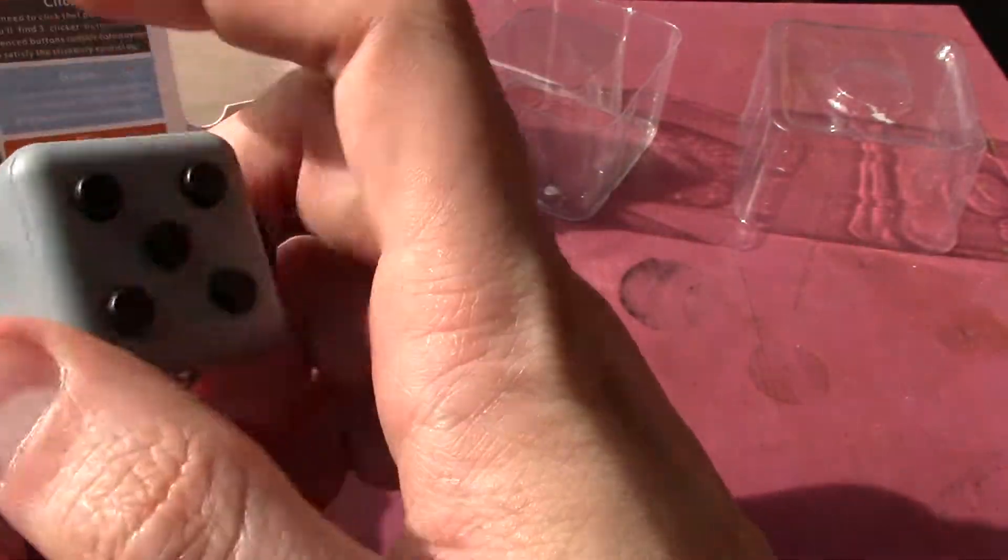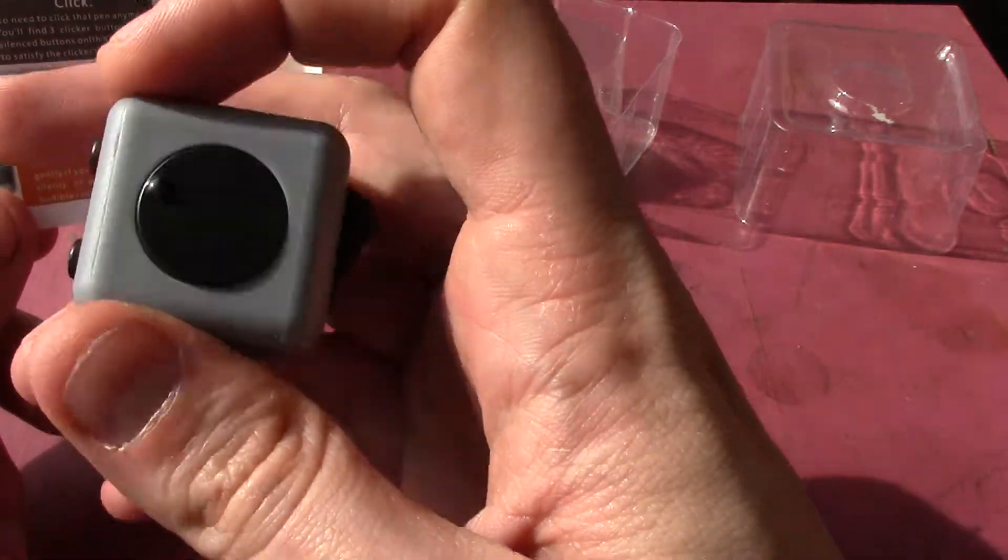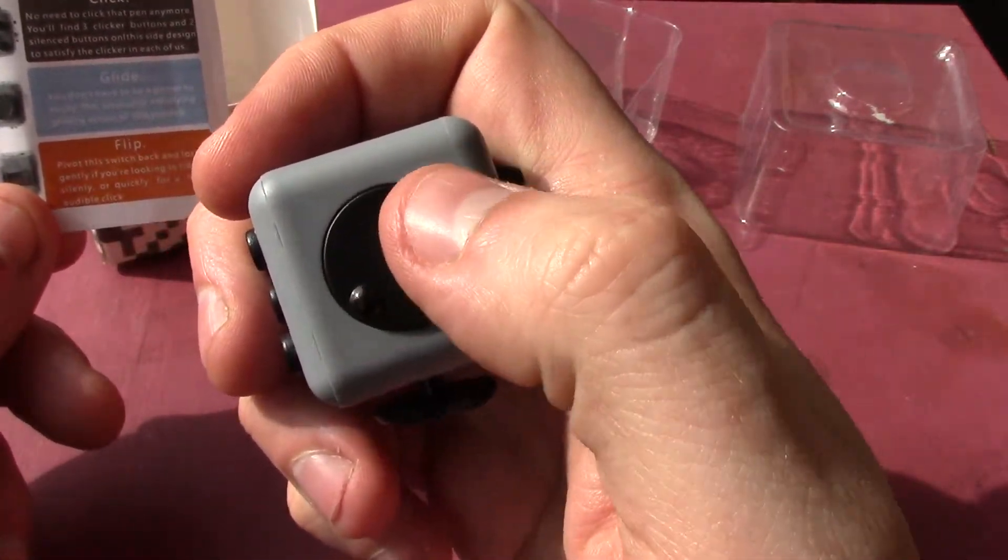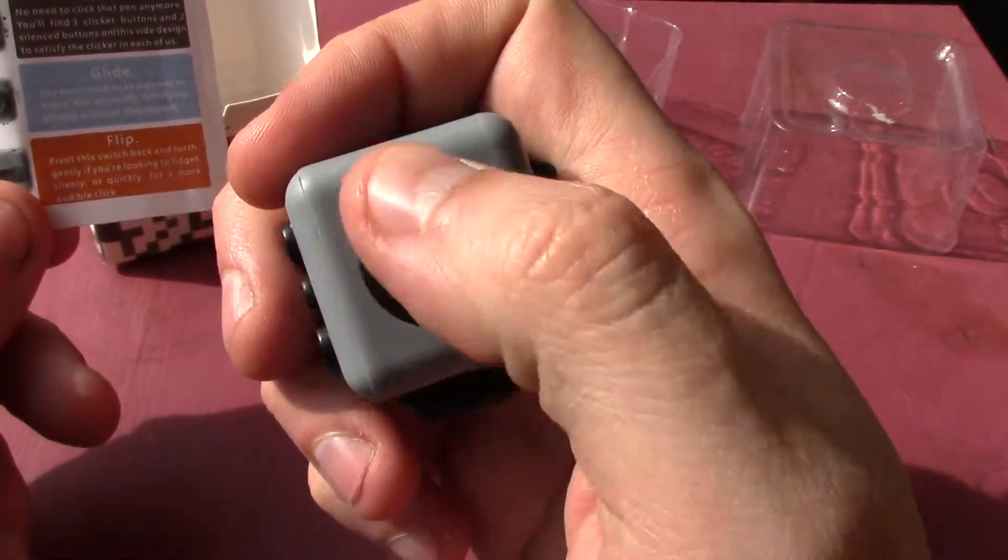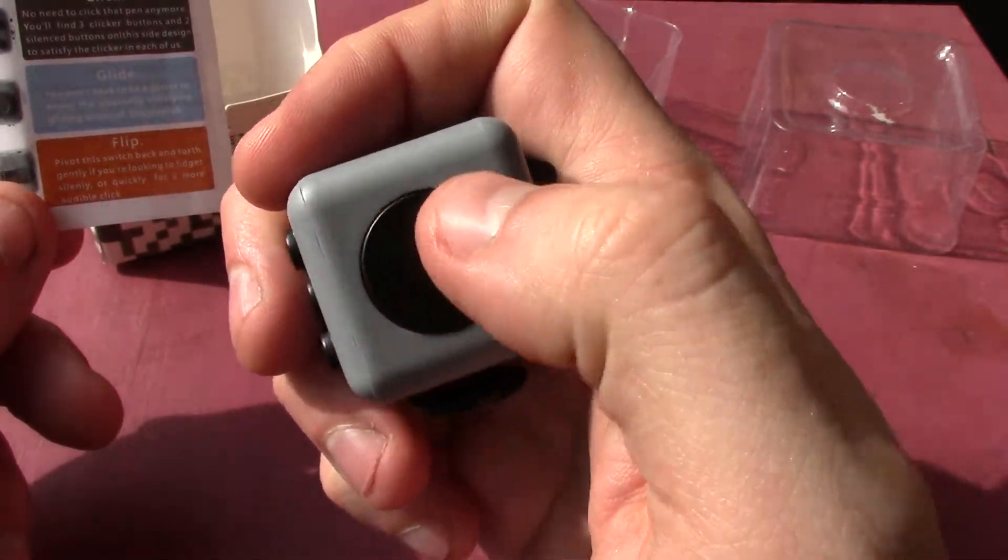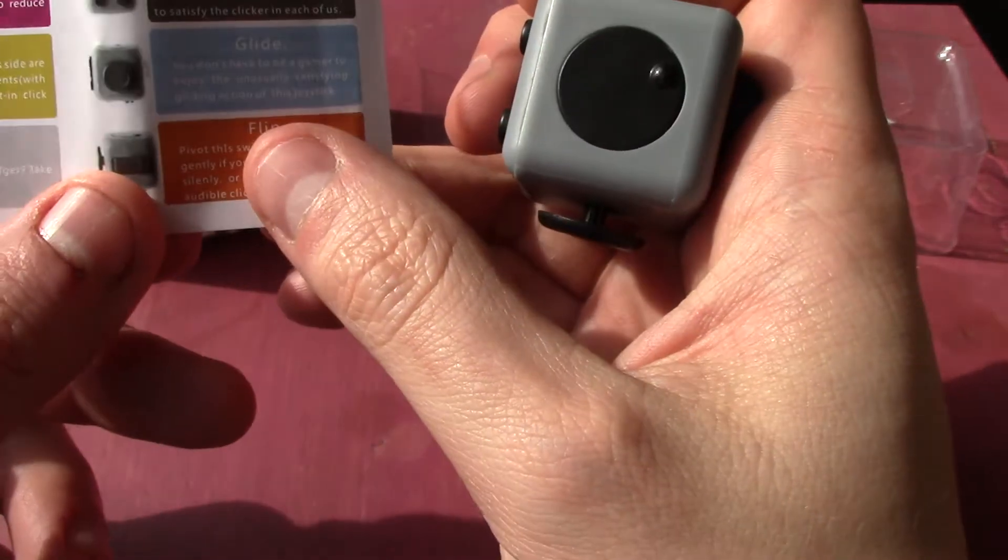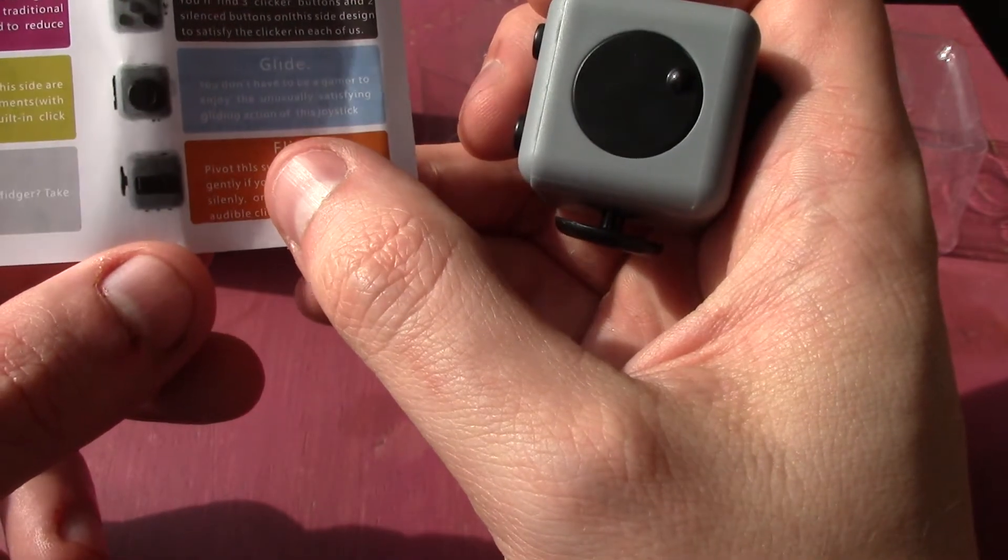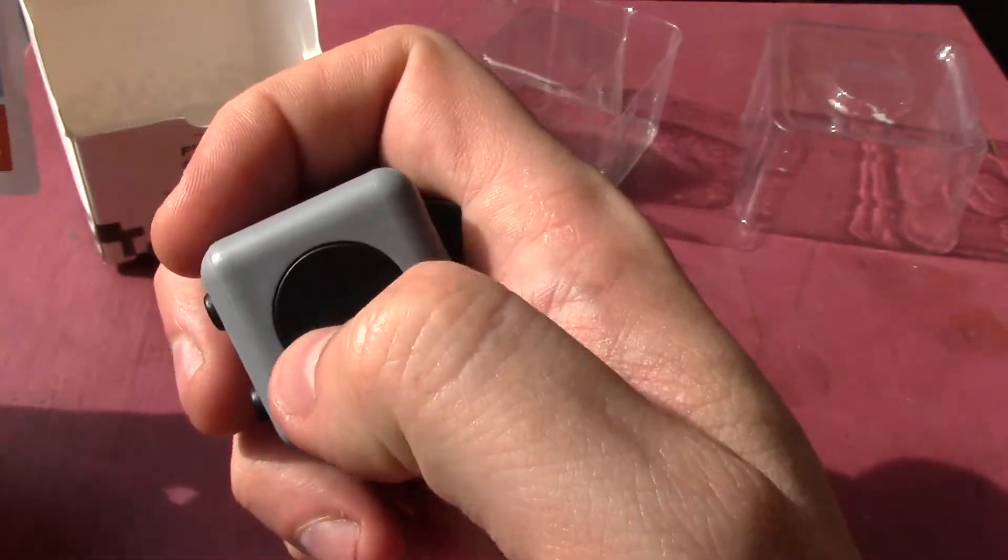Spin, that's this one. As you can see there's a little nub and you can just sort of roll it round in your hand. It says looking for a circular fidget, take the dial for a spin.